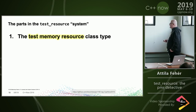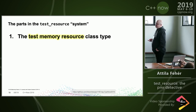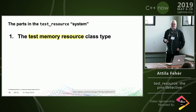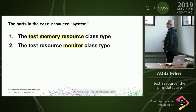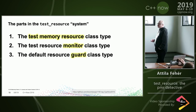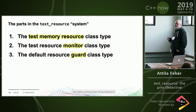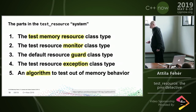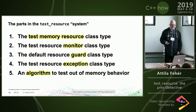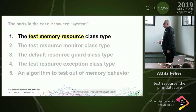The parts of the system we'll discuss: test_memory_resource, which is a class implementing a PMR memory resource; the monitor class; the default_resource_guard, which installs a default resource in its constructor and restores the old one in its destructor; the test_resource_exception; and an algorithm — they work together and we'll see all of these in code examples.